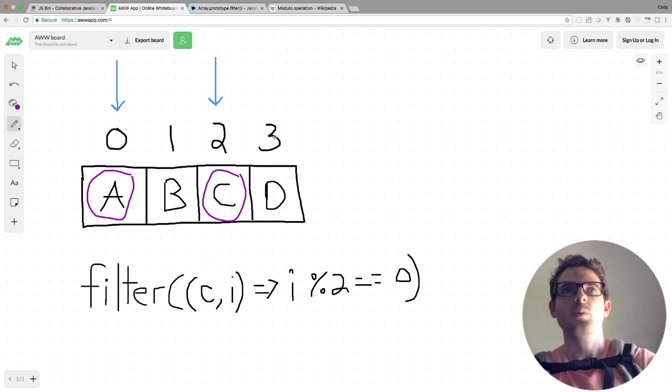And then we move on to the last one, which is going to be D. And again, 3 mod 2. Let's write this out for consistency. We're looking at D and 3. 3 mod 2 is equal to 1. So this is going to not evaluate to true. So ultimately, after this filter method is done running, we're going to have an array which is going to have the elements A and C in it.